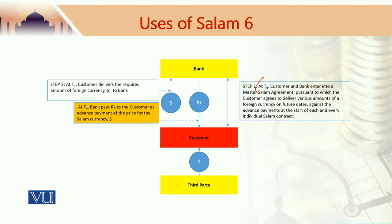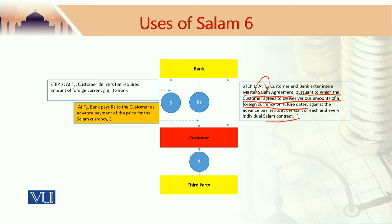Step 1: At T0, the customer and bank enter into a master salam agreement, pursuant to which the customer agrees to deliver various amounts of a foreign currency on future dates against advance payments at the start of each individual salam contract. The customer receives money in rupees — this is the salam price received by the customer from the bank — for a foreign currency which the customer would be delivering to the bank on a future date.